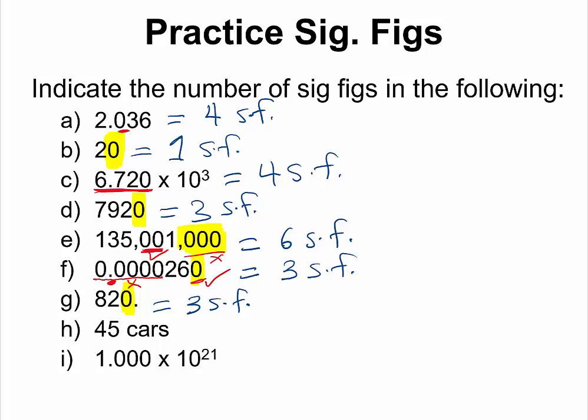For question H, we have 45 curves — that is a counted quantity, and we know that counted quantities are exact, so it has an infinite number of significant figures. And lastly, for question I, we have a number written in scientific notation with no ambiguity as to how many significant figures, because this would be considered four significant figures.